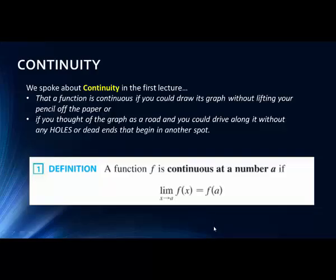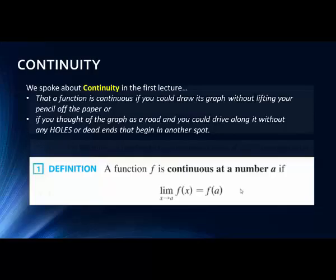Sometimes these definitions can be a little confusing. All it's saying is that in order to find the limit as x is getting near a, we simply plug in that value into the formula. For example, if we were trying to find the limit as x goes to 2 of f(x), that should equal f(2), and if it does, then the function is continuous at that specific value.